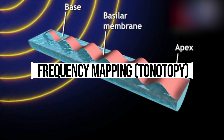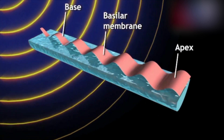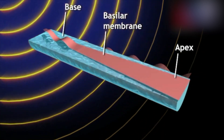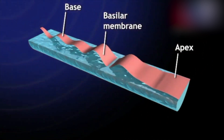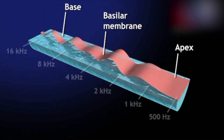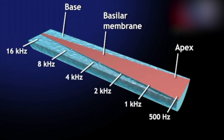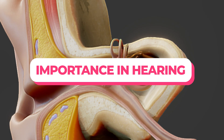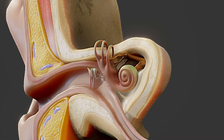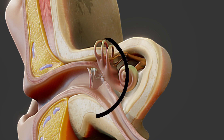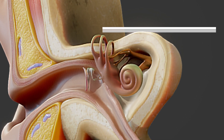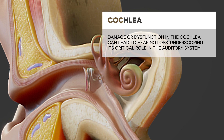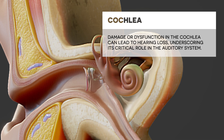Different frequencies of sound affect different parts of the cochlea — a principle called tonotopy. High-frequency sounds cause more movement at the base of the cochlea, while low-frequency sounds affect the apex. This tonotopic organization allows the brain to distinguish between different sound frequencies. Damage or dysfunction in the cochlea can lead to hearing loss, underscoring its critical role in the auditory system.